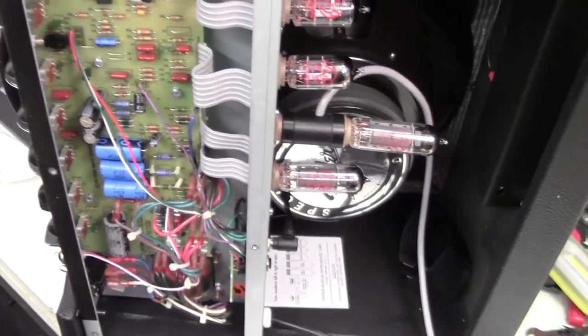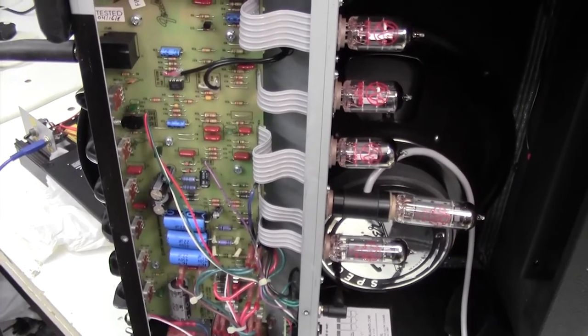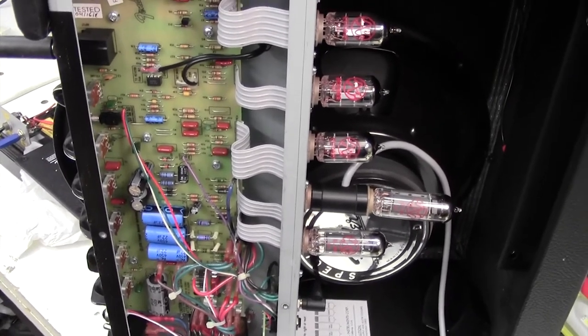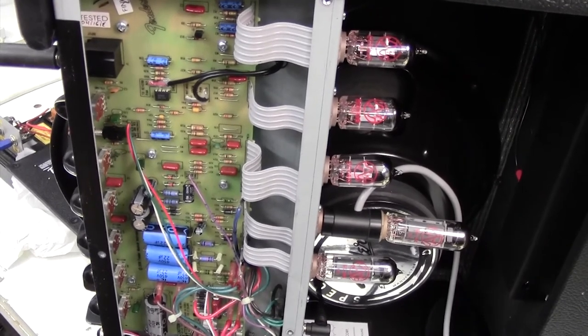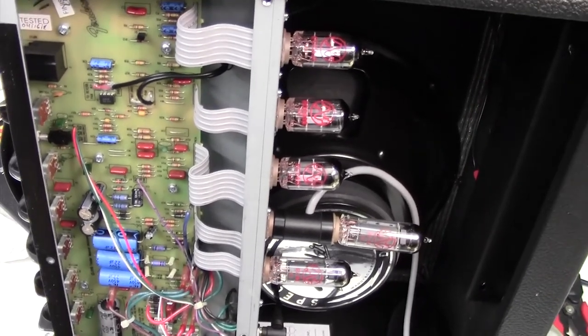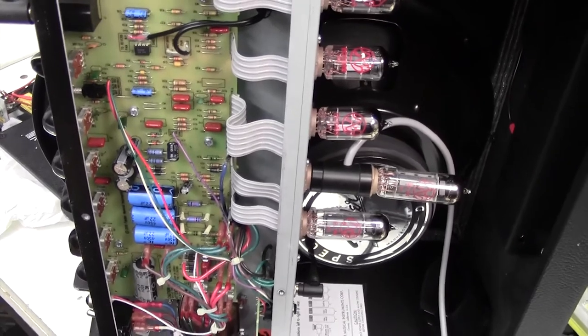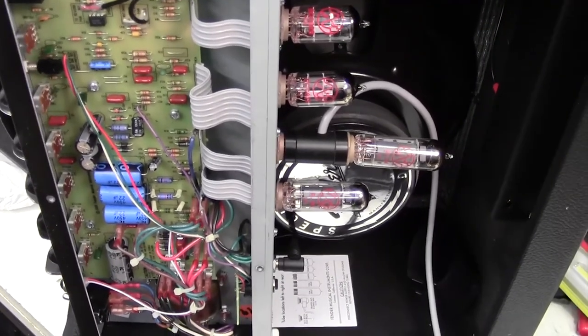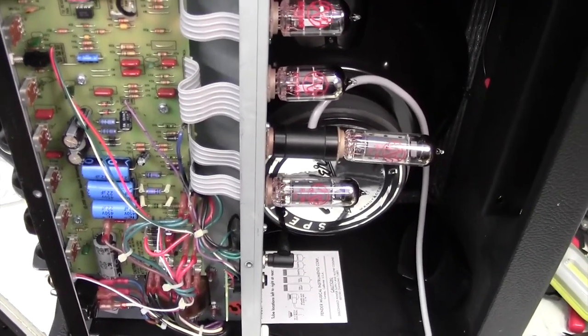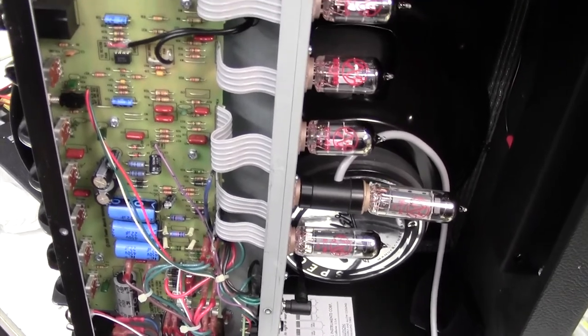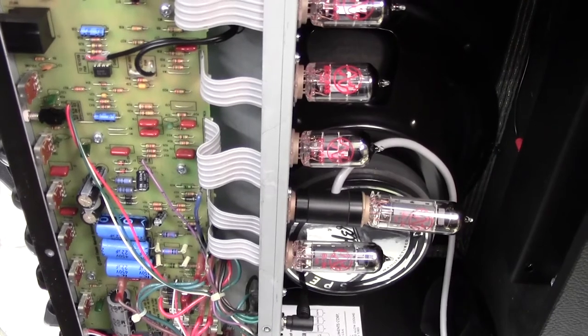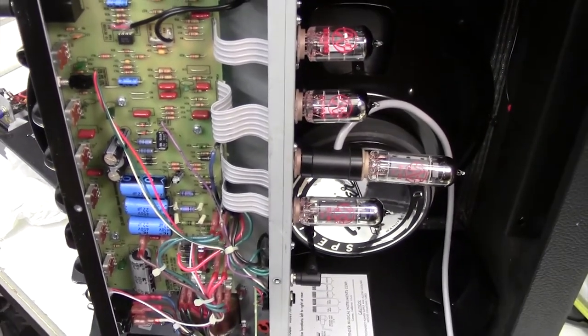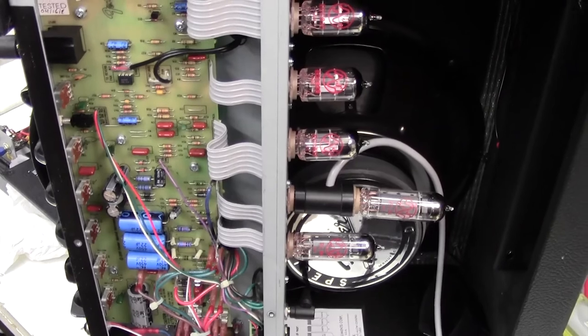So I'm going to go ahead and bias the amp, but I'm not going to show you how to do that on this video. That would be too long, and I'll make that the subject of a separate video. Suffice it to say, Fender haven't supplied a bias pot. You have to swap out some fixed resistors, which is a right pain. But anyway, I'll go ahead and do that. I'll get the cover back on, and then I'll rejoin you just for a final few words.